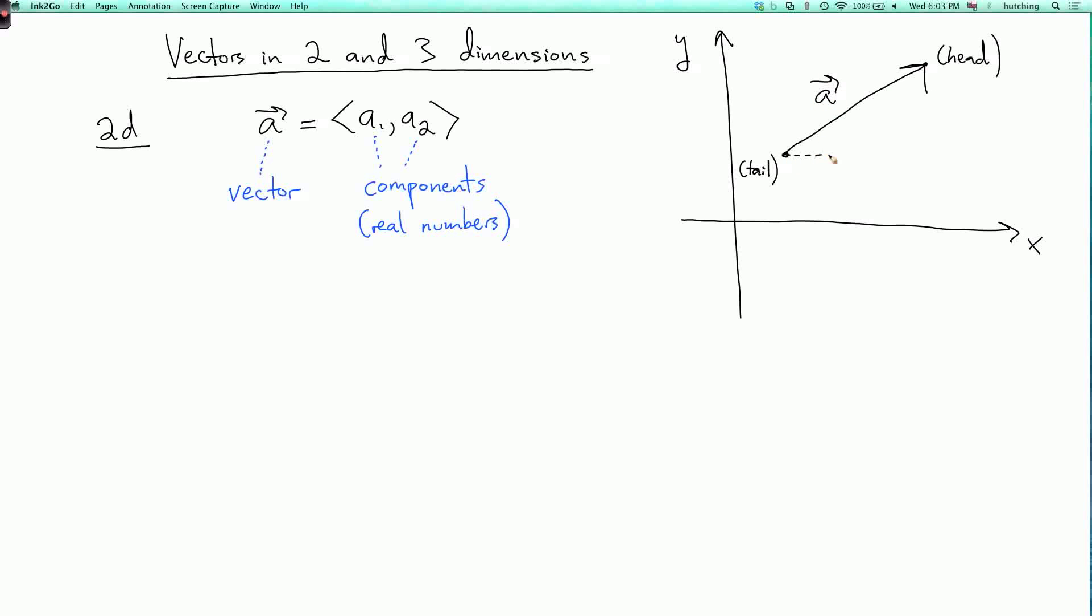And this arrow is supposed to move to the right, distance A1, and up, distance A2. This is the case where A1 and A2 are positive. If A1 is negative, you actually move to the left. And if A2 is negative, you actually move down.